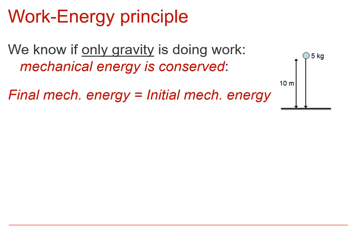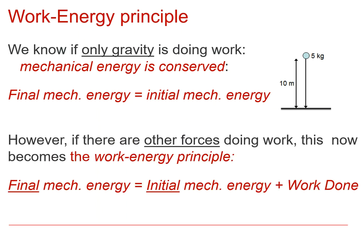If only gravity is doing work, mechanical energy is conserved and the final mechanical energy equals the initial mechanical energy. But more often than not in the real world, there will be other forces doing work as well — it could be air resistance, friction, or driving forces. So what we actually need is a more general rule: the work-energy principle. That says the final mechanical energy equals the initial mechanical energy plus any work done on the object, which could be positive or negative depending on the direction of the forces acting.